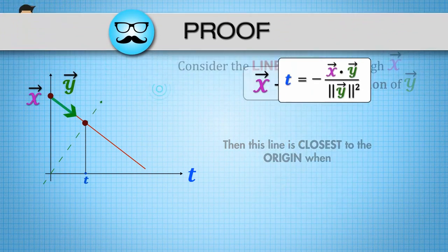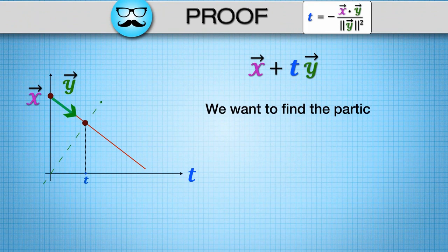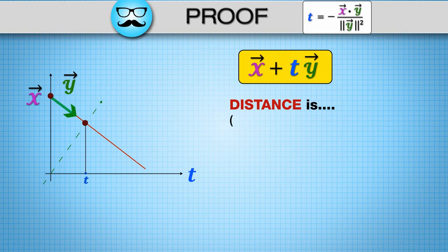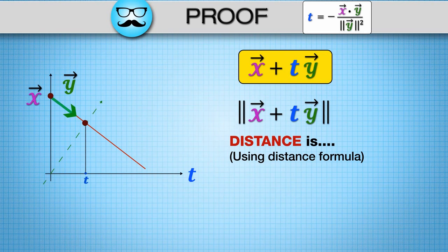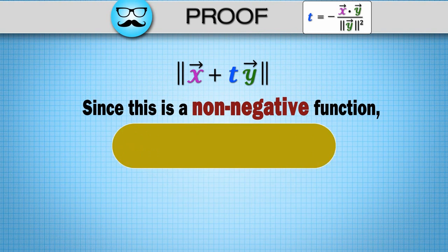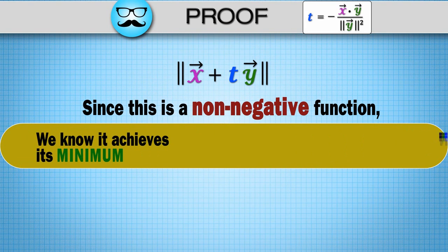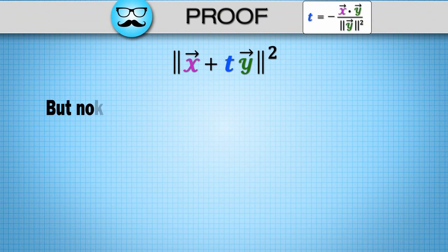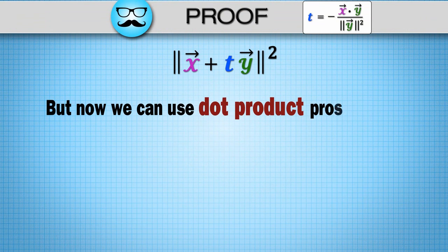Proof: We want to find the particular t that minimizes the distance between x plus ty and the origin. Since this is a non-negative function, we know it achieves its minimum when its square achieves its minimum. But now we can use dot product properties.